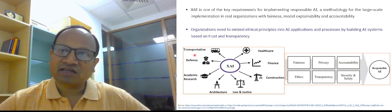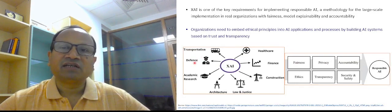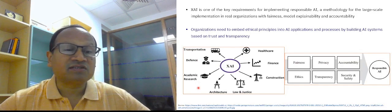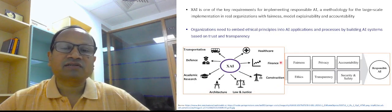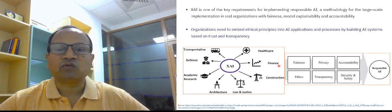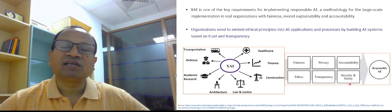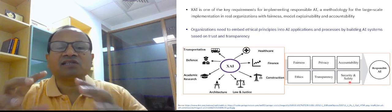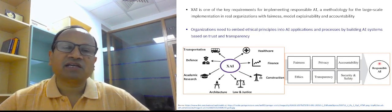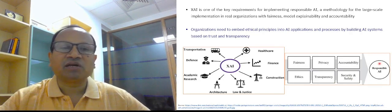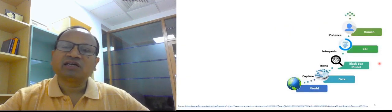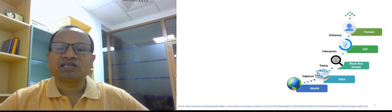These are the application areas. I have mentioned transportation, defense, academic research, architecture, law and justice, construction, healthcare, finance and whatnot. So fairness, ethics, privacy, transparency, accountability, security and safety. All these are the important parts of responsible AI. When you want to build a responsible AI, you need to have explainable artificial intelligence.